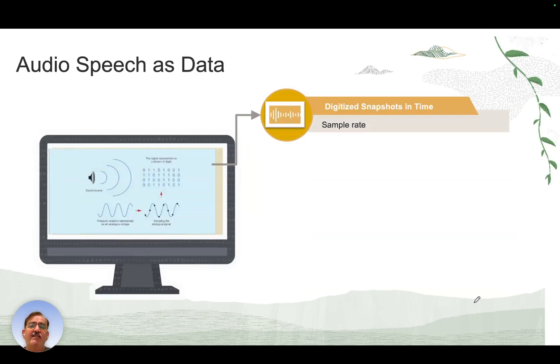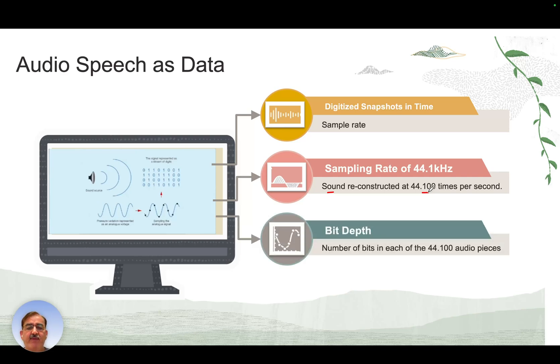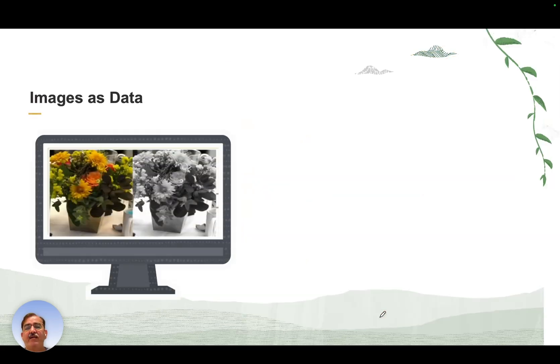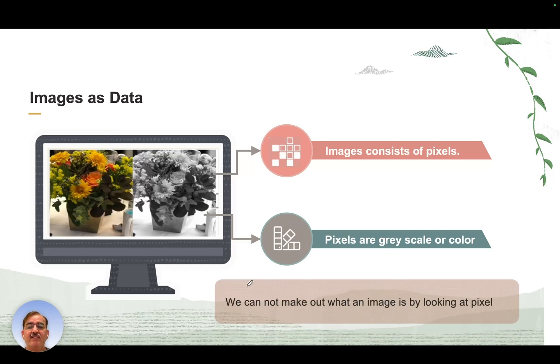Audio or speech data are digital snapshots in time represented by sample rates. For example, a sampling rate of 44.1 kilohertz means sound is reconstructed 44,100 times per second, and bit depth is the number of bits in each of those audio pieces. Can we understand anything from looking at one set of bits? Not much can be inferred from one audio sample—listening to a song for a fraction of a second tells us little. Images consist of pixels in grayscale or color, but we cannot determine what an image is by looking at a single pixel.